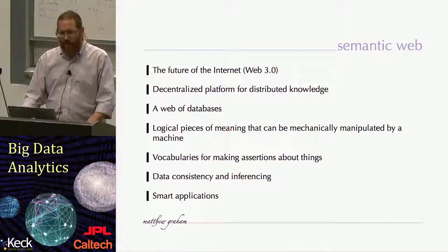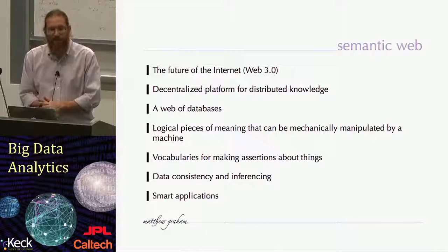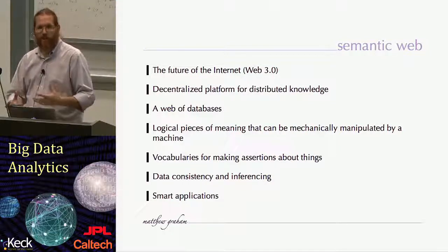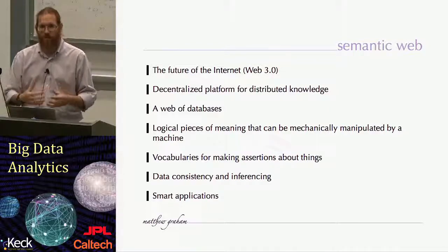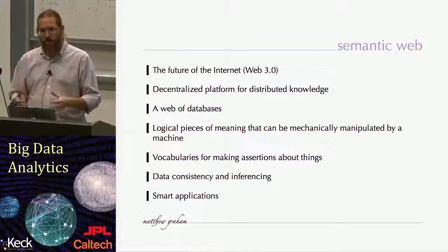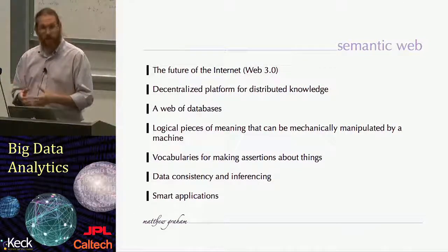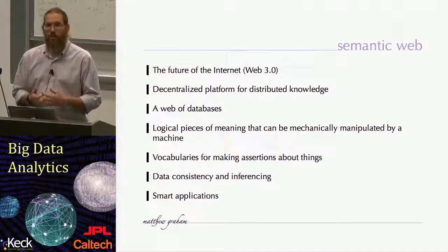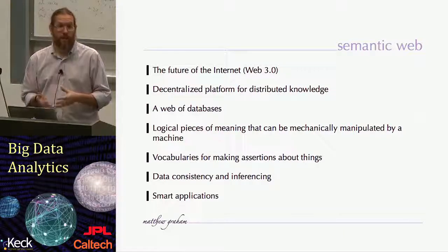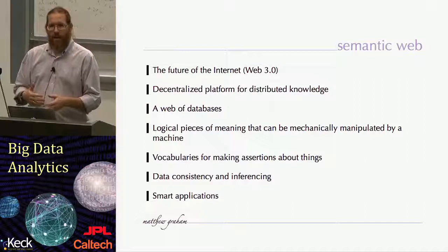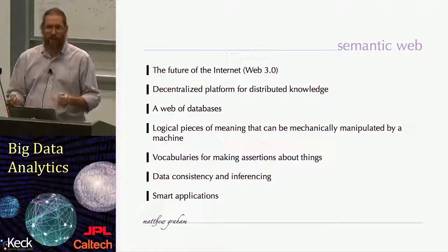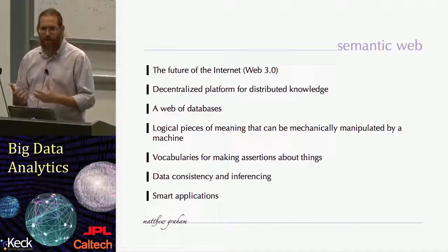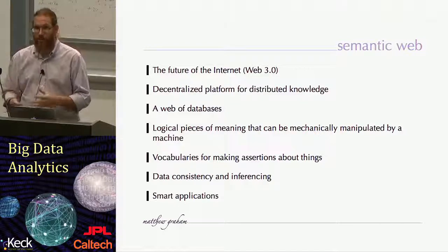It's predicated on a set of logical pieces of meaning that can be mechanically manipulated. That means there is a computational representation of not just data and information, but also knowledge — domain knowledge, ideas, concepts, and how they relate to each other — in such a way that a computer can process them and make decisions based on them. It encompasses vocabularies for making assertions about things, checking for consistency between meaningful statements, and inferring new pieces of knowledge. This leads to the notion of smart applications, which have domain knowledge encoded into them and allow you to do sophisticated things.